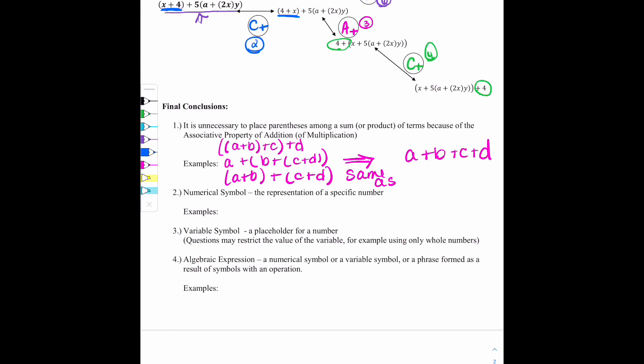Next, number two, numerical symbol. Numerical symbol is the representation of a specific number. So for examples, it's just another way to talk about numbers. Zero, one, two-thirds, negative three. Trying to give all different representations. How about a decimal? Negative 124.5. An irrational number, pi. Those all can be referred to as numerical symbols.